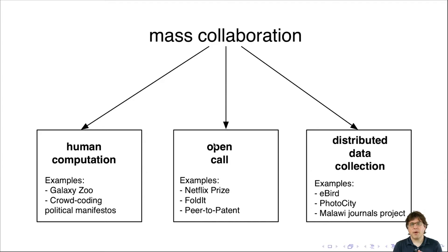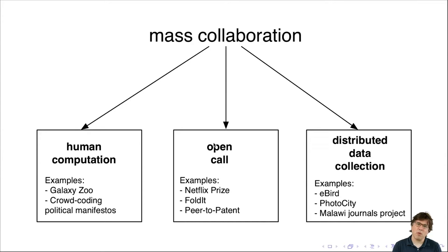I like to think about mass collaboration as falling into three main categories. This categorization scheme is one I developed thinking about how these might be used in social research. For people in other fields, you may end up organizing mass collaboration in different ways, but for social research, I think there are three main buckets.